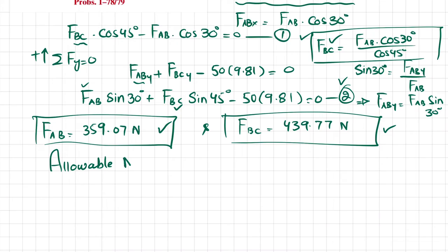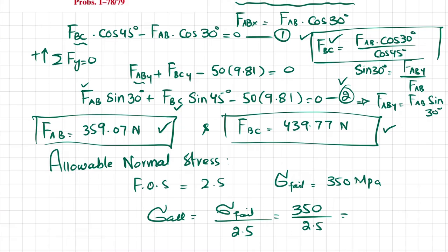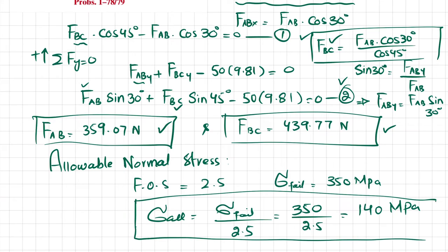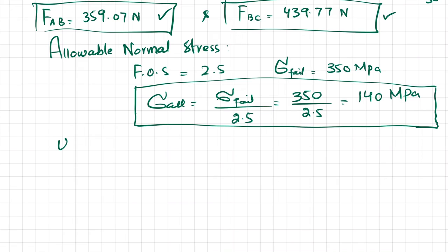We calculate the allowable normal stress because the factor of safety is given as 2.5 and the failure stress is 350 megapascals. The allowable stress equals failure stress divided by factor of safety: 350 divided by 2.5 equals 140 megapascals. This means the stress must be less than or equal to 140 megapascals.